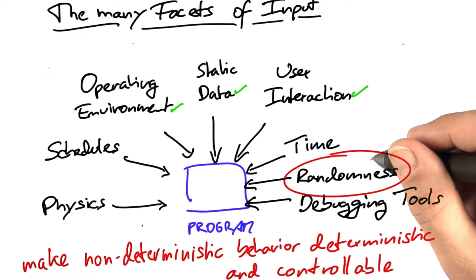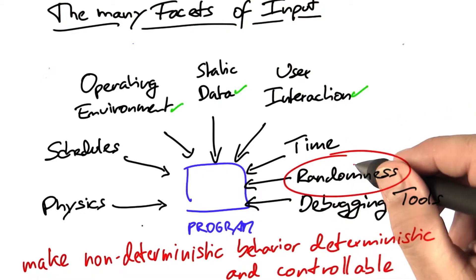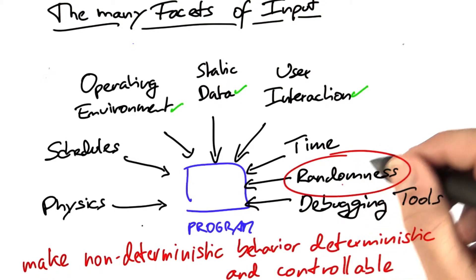If you use a pseudo-random generator, be sure to save its seed. If you use a true random generator, save the sequence of random numbers.